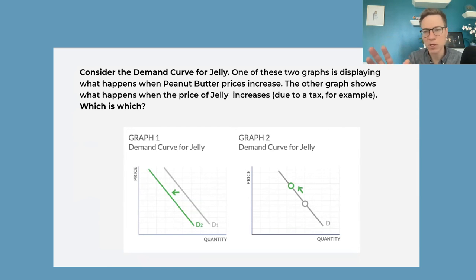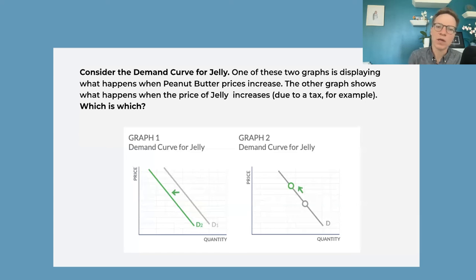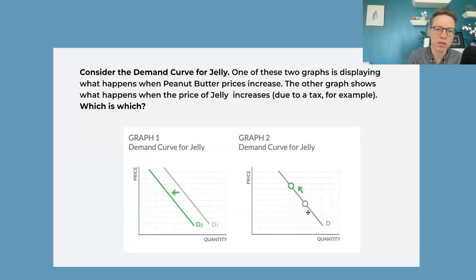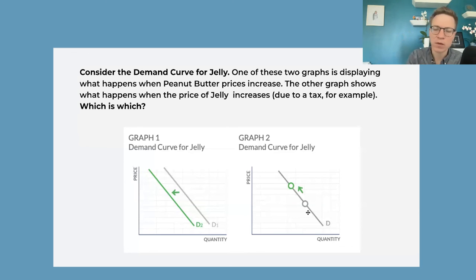And in econ, we have all of these annoying vocabulary quirks. One of them is that we call a shift in demand a 'change in demand.' We call a movement along the curve a 'change in the quantity demanded.' So that's what we're going through in this slide.